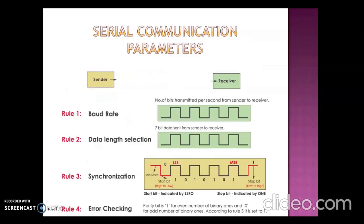Next, which are the different parameters on which serial communication is going to perform? Baud rate, data length selection or data framing, synchronization, and error checking. These are the four parameters on which we are going to design or configure our serial communication header files.